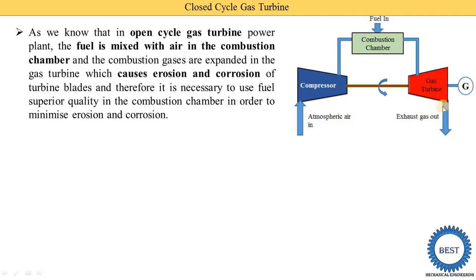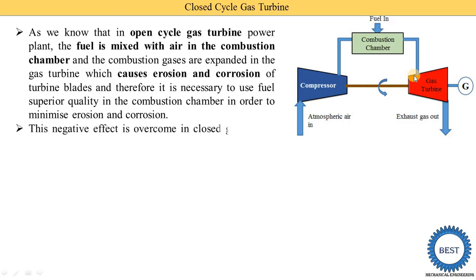Therefore, it is necessary to use superior quality fuel in the combustion chamber in order to minimize erosion and corrosion. Because in the turbine we supply this combustion product, there is a chance of erosion and corrosion. If we want to minimize erosion and corrosion, we need to use superior quality fuel in the combustion chamber. This negative effect is overcome in a closed cycle gas turbine power plant.